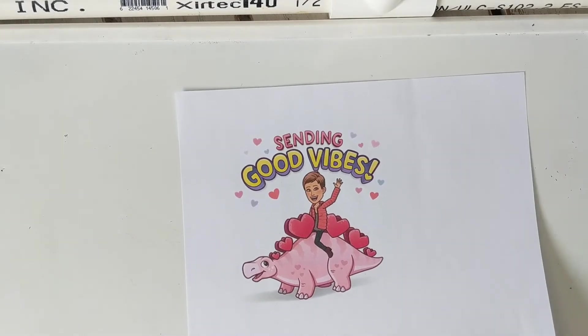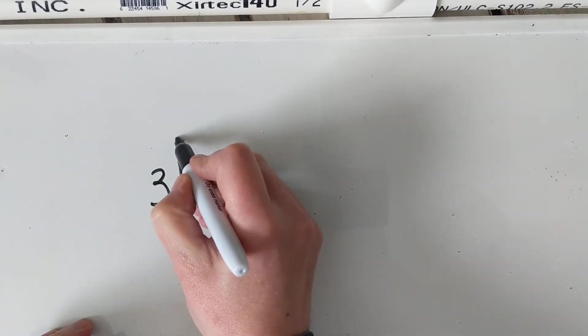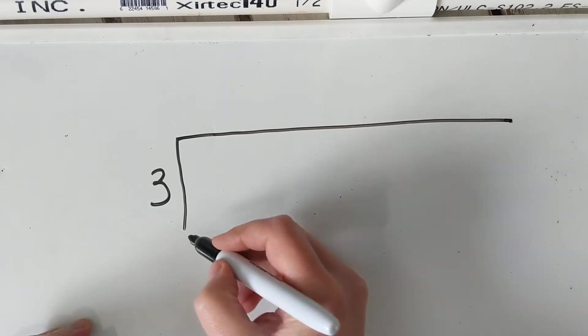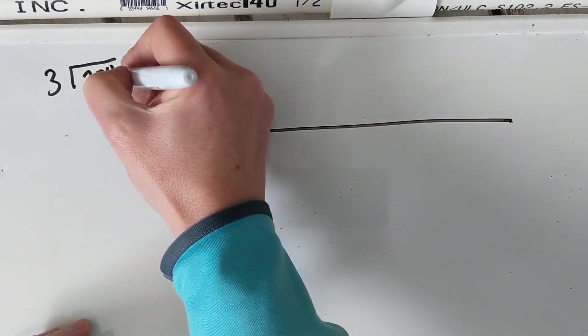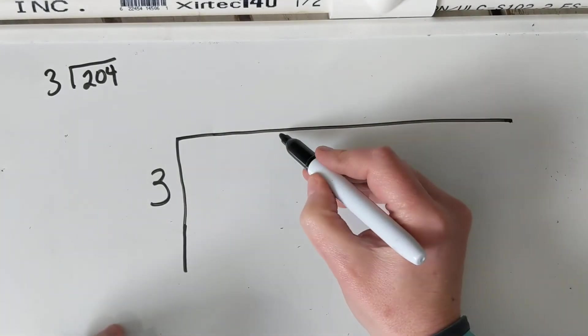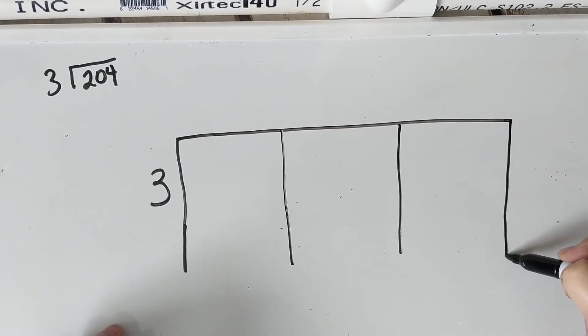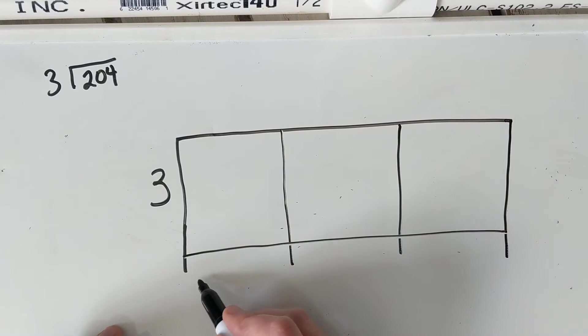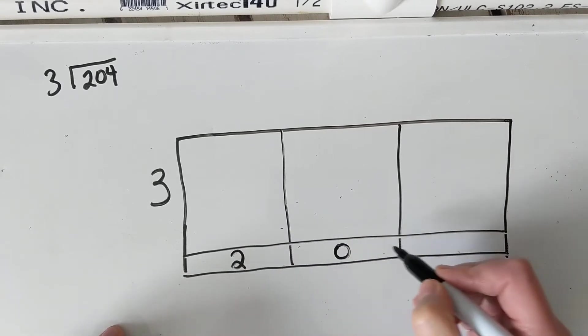Here we go with our first example. The original question is two hundred and four divided by three. I'm going to take that and put it into my fusion machine so that I can use that to help me solve this. Into my fusion machine I'm going to put two hundred and four.